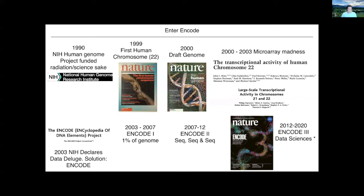In ENCODE 2, sequencing had opened up, so now we could get the whole picture. Instead of using a microarray — where you're putting the net into the river and you're limited to the pieces of DNA you can search — with sequencing you could just get all of the genome and then map it back to where it came from. That was a really interesting perspective change and made the data much more useful. Everybody started using ENCODE data right after this ENCODE 2 phase finished, where they saw the power of sequencing versus microarray technology.